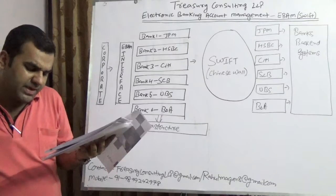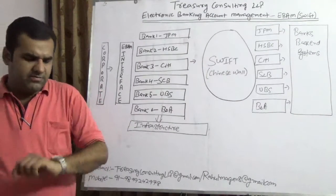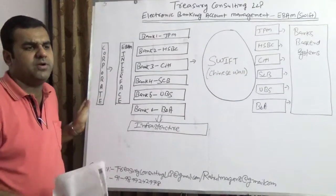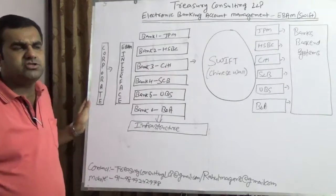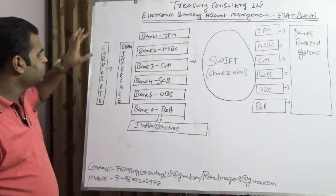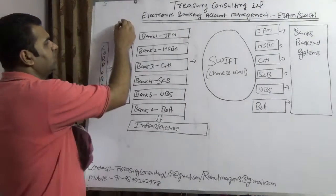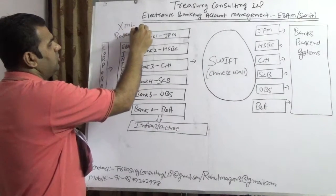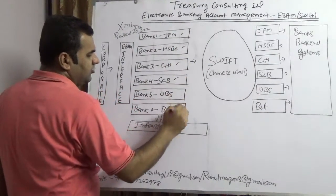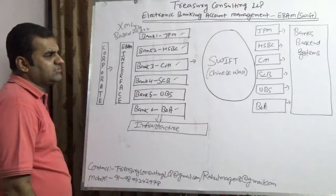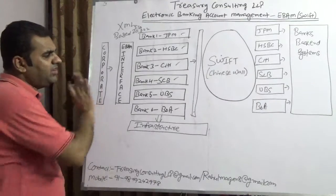Many vendors including Wipro, Identrust, Pegasystems and others are offering EBAM solutions. Now here we are making a small example of EBAM. Here is a list of corporates, and here is the EBAM interface — which is XML-based ISO 20022. I assume six banks: JP Morgan, HSBC, CTE, Standard Chartered, UBS, and Bank of America. They are all connected via a Chinese wall which is SWIFT. Here is the SWIFT infrastructure, connected with that Chinese wall.